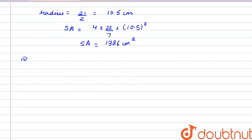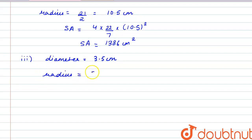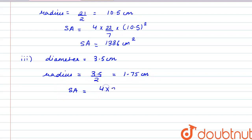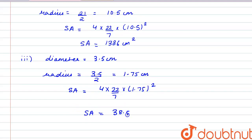In the third part, the diameter is given as 3.5 cm. So the radius, that is diameter by 2, is 3.5 by 2, that is 1.75 cm. The surface area in this part comes out as 4 × (22/7) × 1.75² = 38.5 cm².